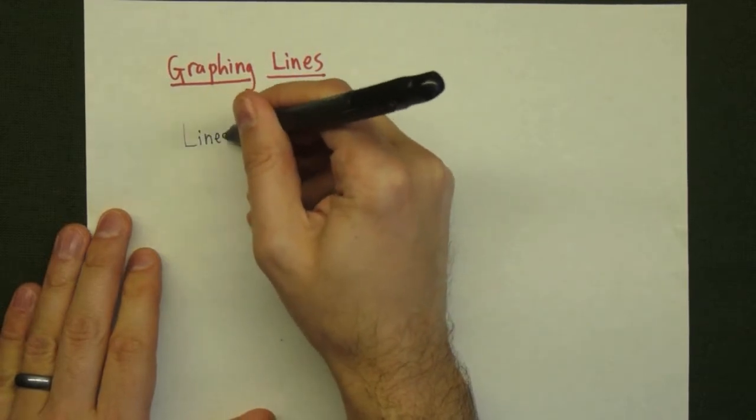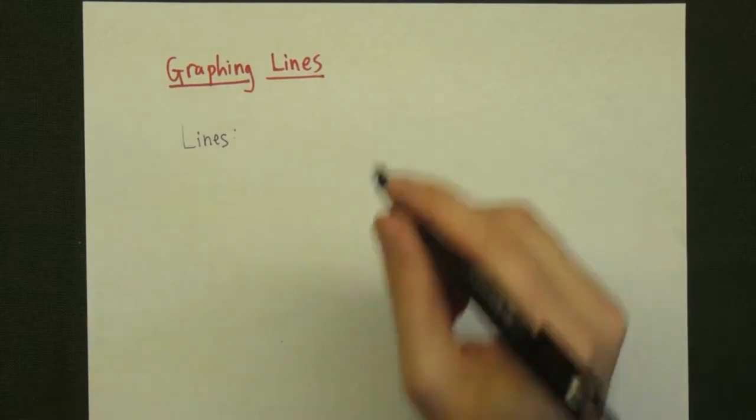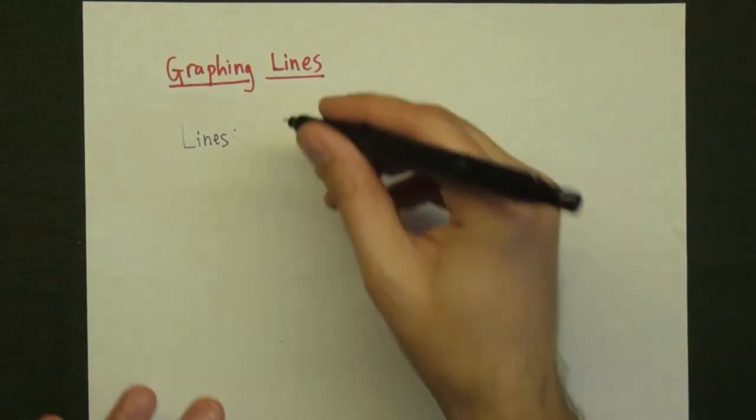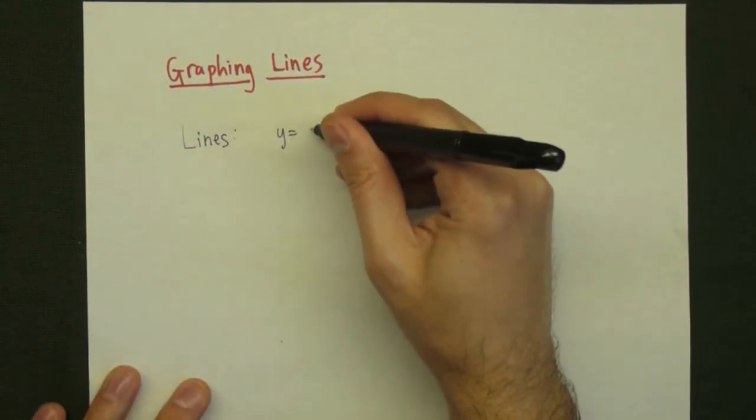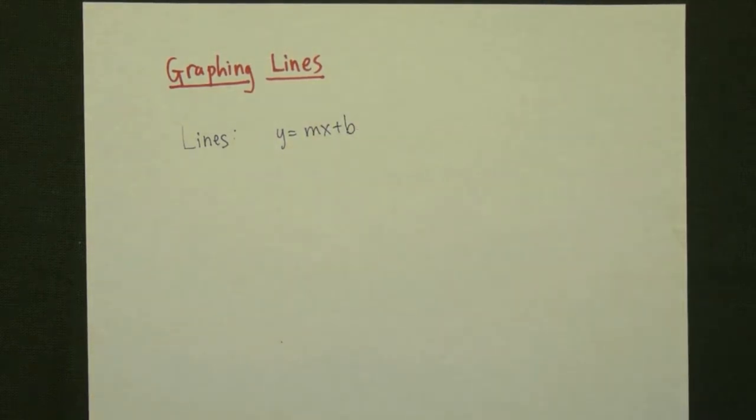In your algebra class, you learned how to graph the equations of straight lines. What we're going to show you in this video is a review of exactly that. Now, lines come in two standard forms. There is the slope-intercept form, where y is equal to mx plus b.